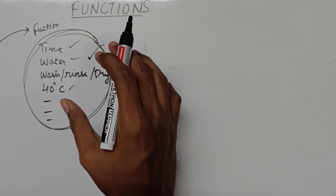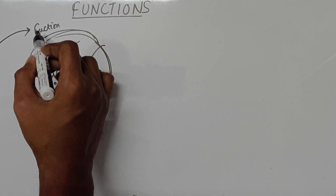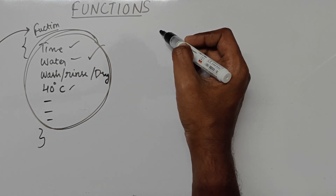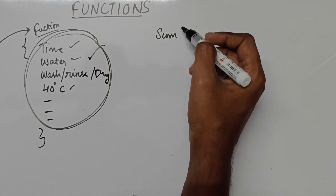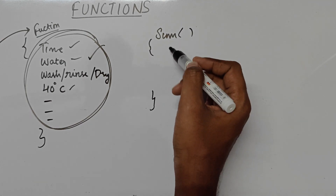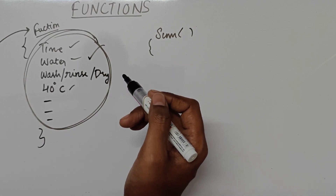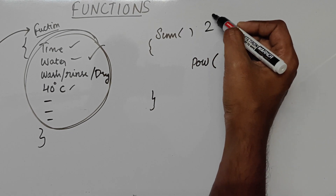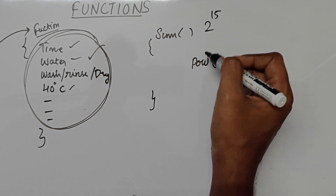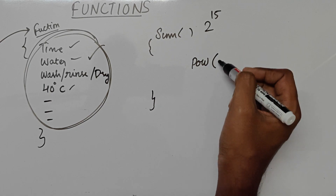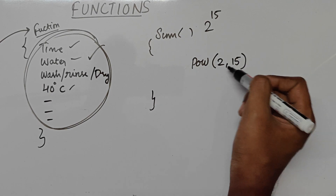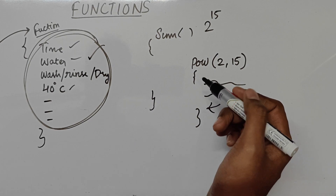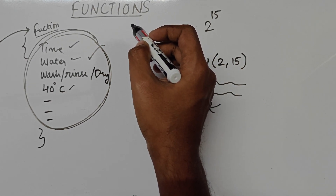A function will have some set of things to do. And whenever you call this function, all the things inside the function will get executed. So let's say you have a function for the sum of two numbers — whenever you call this function, it is going to add those two numbers and give it back to you. Or let's say you have a function to find the power of any two numbers. So if you want to find 2 raised to power 15, you call this function, tell it to find that power, and this function will execute and give an answer in return. That is where you are going to use functions.